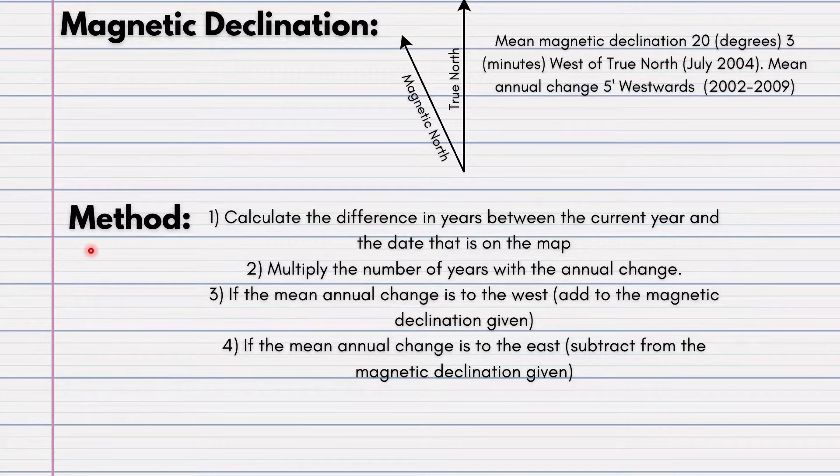There are four steps to solve this question for magnetic declination. The first step would be to calculate the difference in years between the current year and the date that is on the map. The date on the map will be this year, your July 2004. Remember, each question will be different. Some questions will ask you for the magnetic declination for the current year. Other questions may ask you for, let's give an example of 2019, 2018, stuff like that. Your second step would be to multiply the number of years with the annual change.